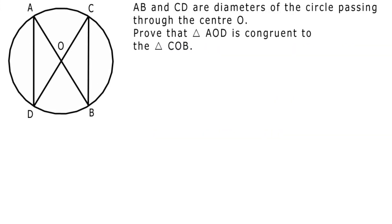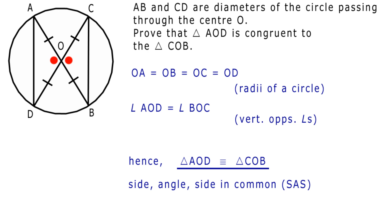AB and CD are diameters of the circle passing through the center O. Prove that triangle AOD is congruent to triangle COB. Well, OA equals OB, which equals OC, which equals OD. They're all radii of a circle. Angle AOD equals angle BOC. These are vertically opposite angles. Hence, triangle AOD is congruent to triangle COB. We have side, angle, side all in common: SAS.